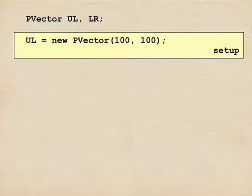If I tried to reference ul.x before calling a line like this, I would get an error because there's no p-vector there yet. But using this syntax, I have created a p-vector and now it has two values inside of it, 100 and 100.